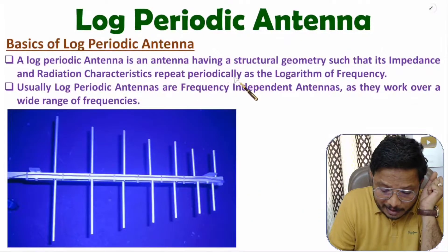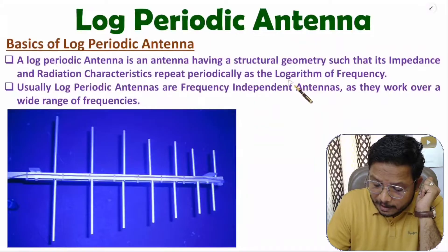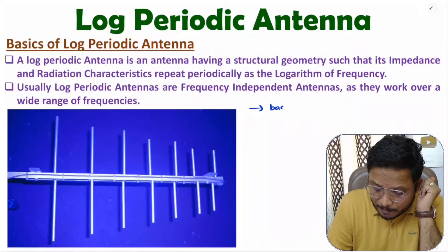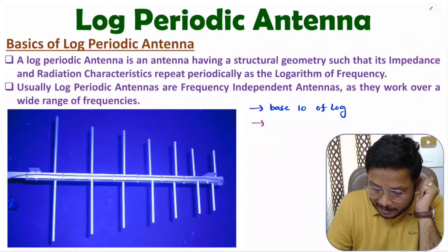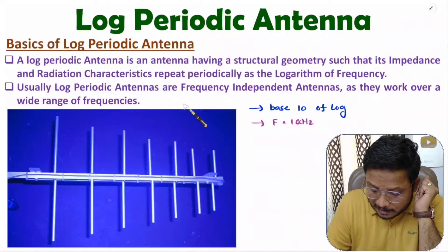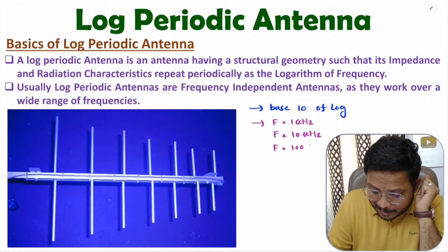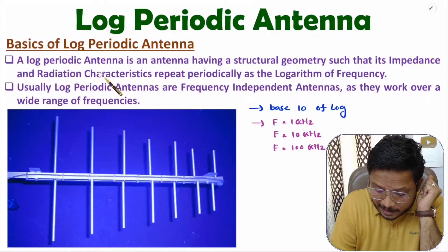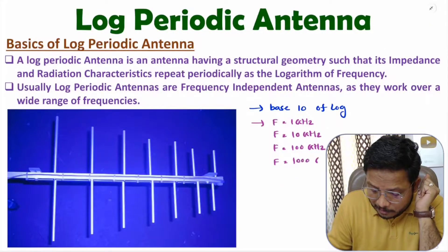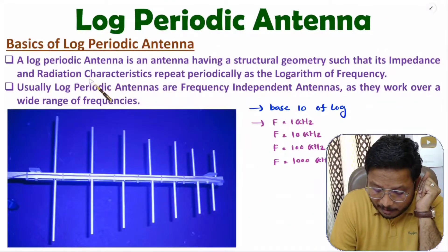Let me take an example. Consider a log periodic antenna with base-10 log. If the antenna functions at a frequency of 1 GHz, its radiation characteristics will repeat at 10 GHz. After 10 GHz they repeat at 100 GHz, and after 100 GHz they repeat at 1000 GHz — repeating periodically based on the logarithmic function of frequency.